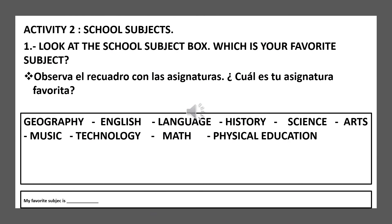Activity 2: School Subjects. Look at the School Subject box. Which is your favorite subject? Observa el recuadro con las asignaturas. ¿Cuál es tu asignatura favorita? Ahí están los nombres: Geography, English, Language, History, Science, Arts, Music, Technology, Math, Physical Education. What's your favorite subject? My favorite subject is English.